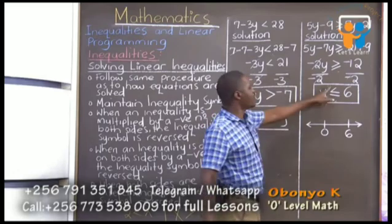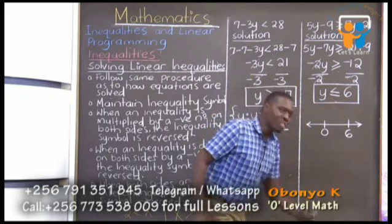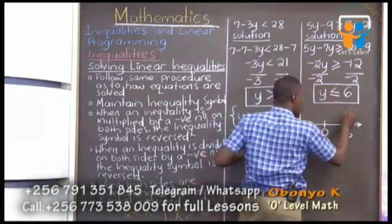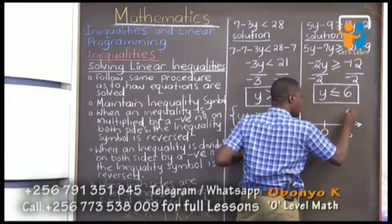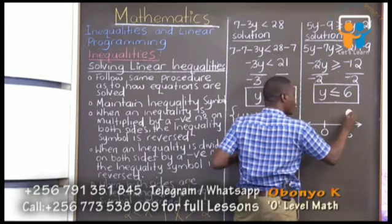They are telling us less than or equal to. But less than or equal to, we said, is supposed to be a closed word, a closed circle, or you can call it a closed dot.